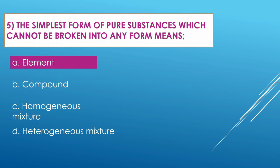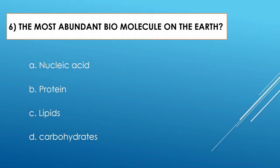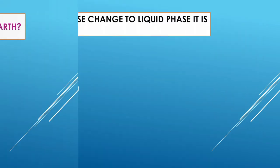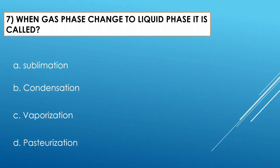Question number six: The most abundant biomolecule on the earth — Option A: nucleic acid. Option B: protein. Option C: lipid. Option D: carbohydrate. The correct option is carbohydrate, which is the most abundant biomolecule on the earth.